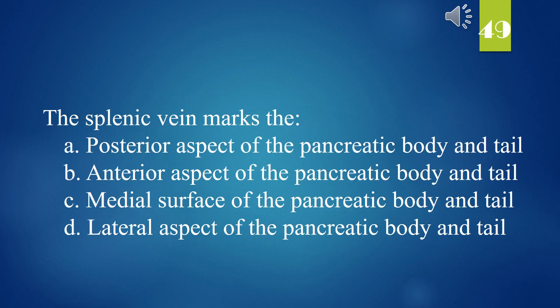The splenic vein marks the: A. Posterior aspect of the pancreatic body and tail. B. Anterior aspect of the pancreatic body and tail. C. Medial surface of the pancreatic body and tail. D. Lateral aspect of the pancreatic body and tail. The answer is A. Posterior aspect of the pancreatic body and tail.